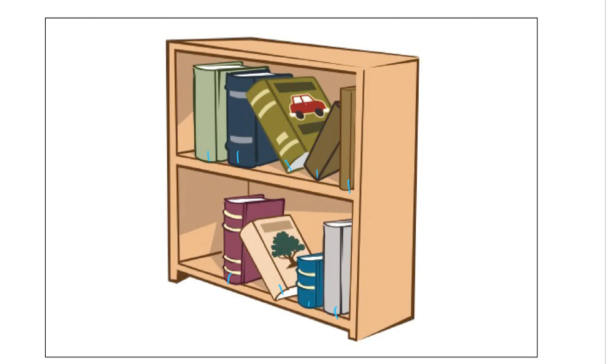So we can look at this and sort these books different ways to make different combinations or different ways to add 2 numbers to make 9. We can look at the top shelf and say there's 1, 2, 3, 4, 5 books on the top shelf and 4 on the bottom. So 5 plus 4 equals 9.